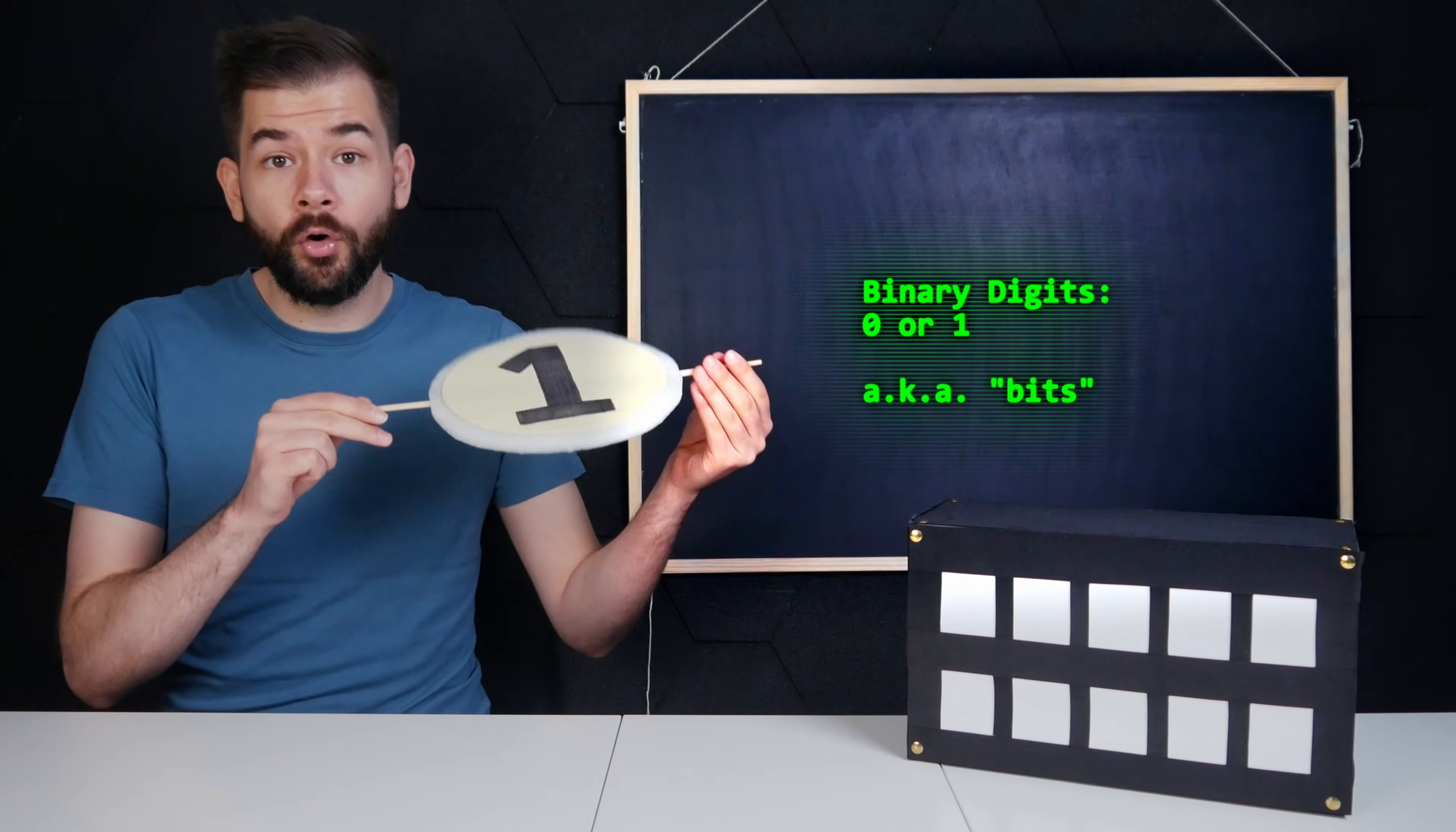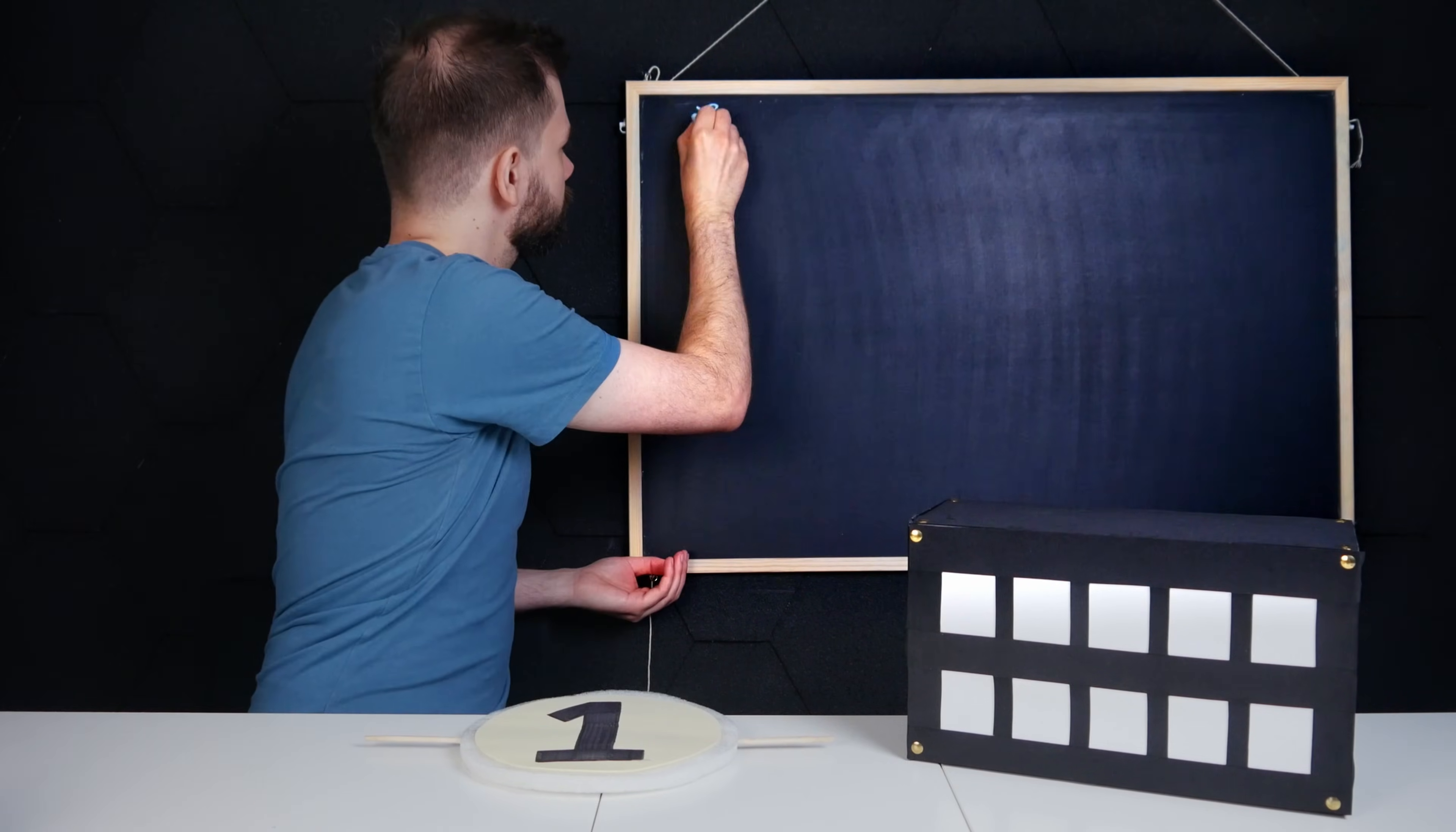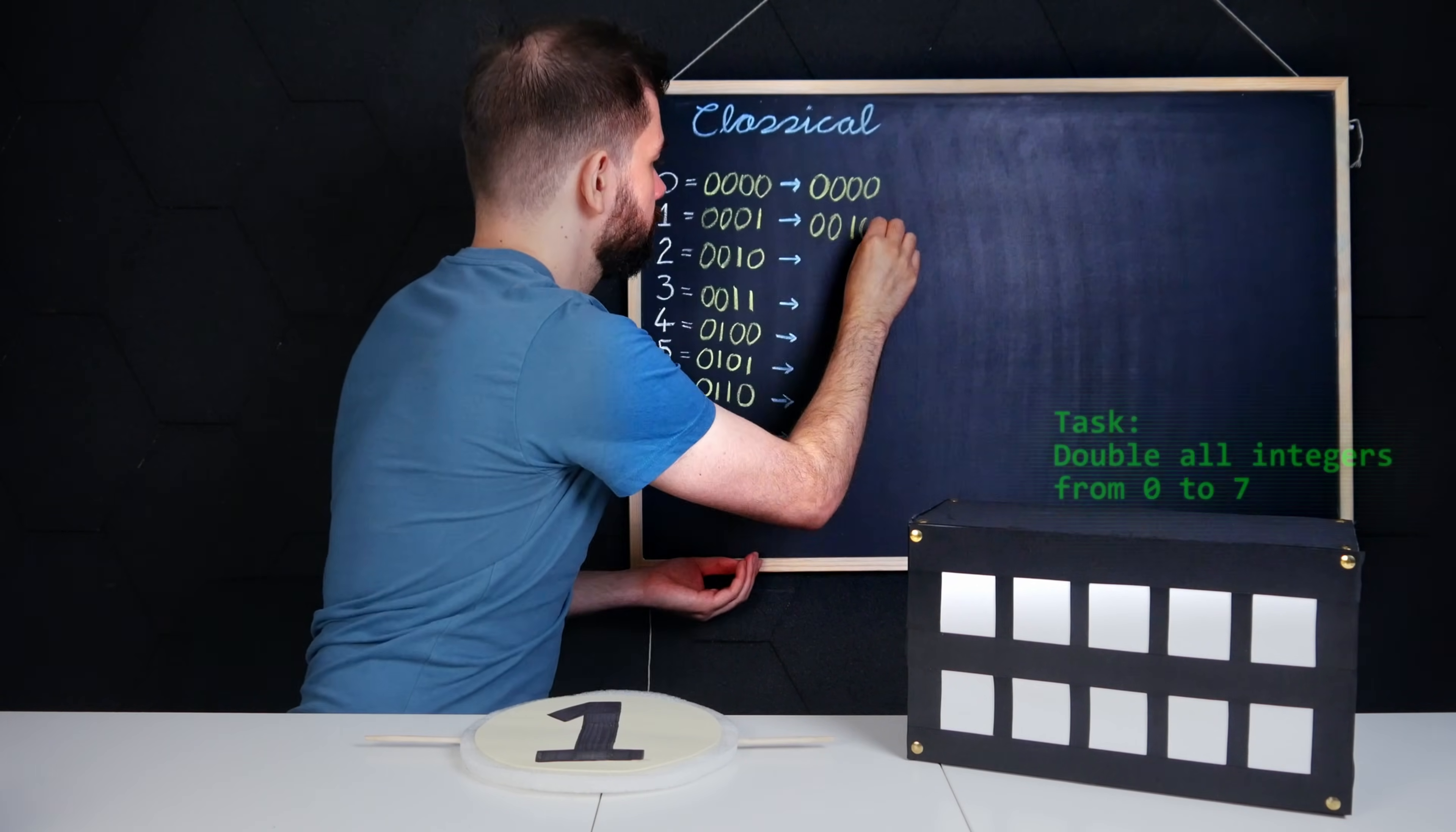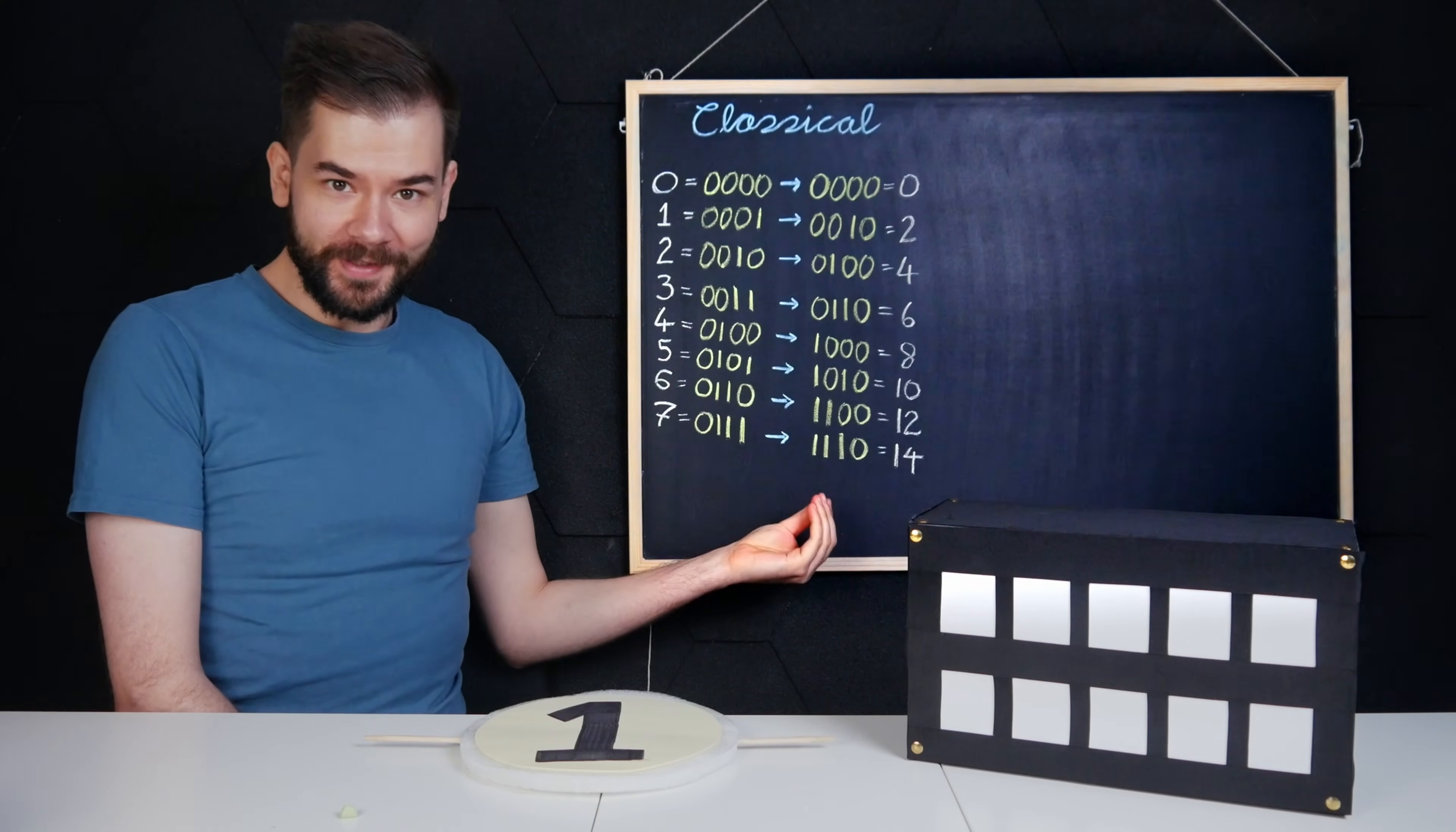They are in a zero state or a one state. Let's now say I'm terrible at arithmetic, and I want to find out the double of all numbers from zero to seven. Then I can write a short script to say, take the starting number, double it, and spit out the answer. Eight computations, eight concrete answers.